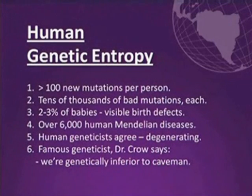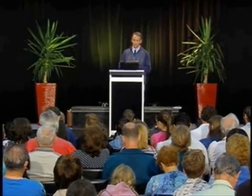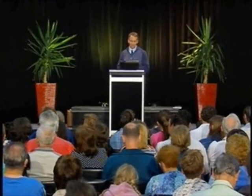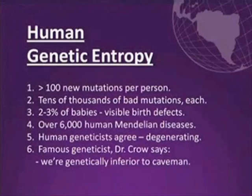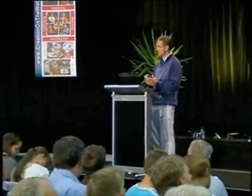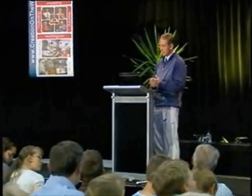By now, we have tens of thousands of bad mutations each. How many of you are mutant? We are all mutant. We are seriously mutant. Statistics show that 2% to 3% of all newborns have visible birth defects — a very high rate, and this is extremely tragic. But that 2% to 3% represents just the tip of the iceberg.